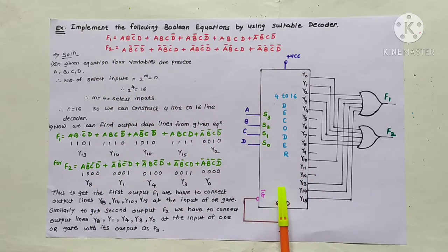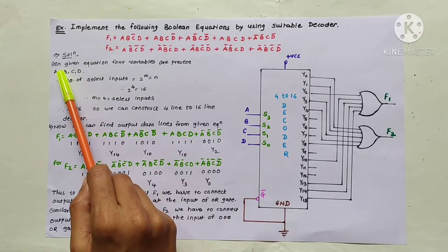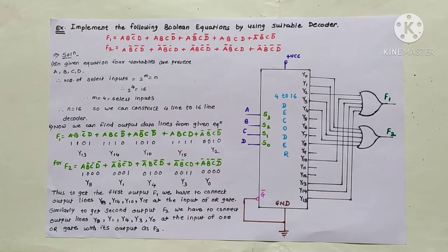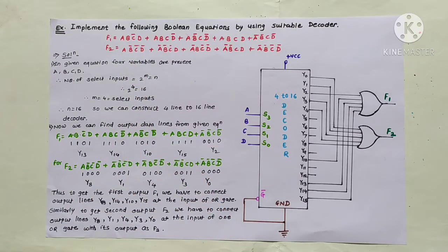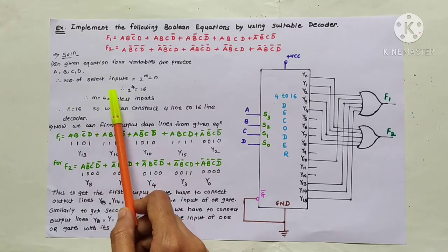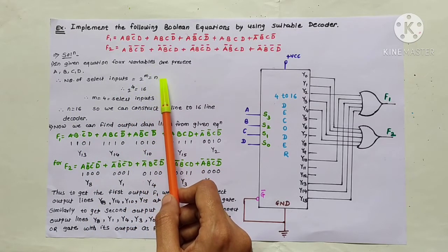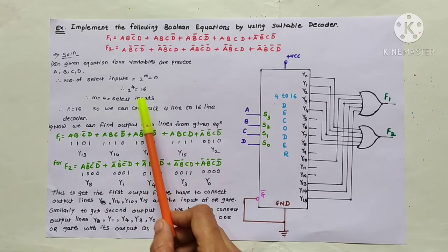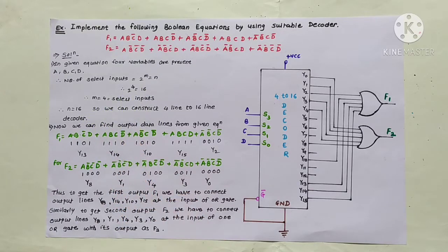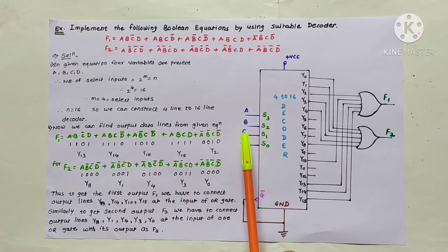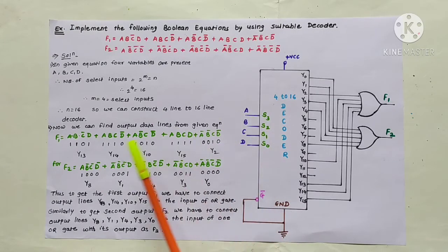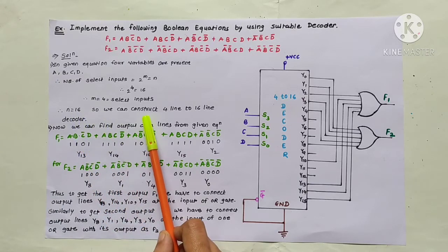To implement these boolean equations using a suitable decoder, first decide how many variables are present. In this equation, four variables A, B, C, D are present. Using the formula 2 raised to M equals N, where M represents select lines and N represents data outputs: 2 raised to 4 equals 16. So M equals 4, meaning 4 select lines, and A, B, C, D are the 4 select inputs.